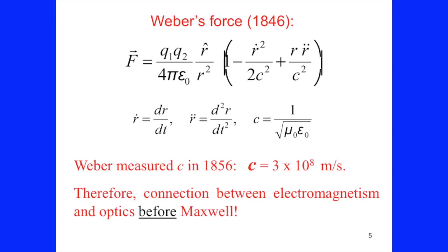The third component of Weber's law depends on acceleration in order to deduce Faraday's law of induction — that was the main idea. Here is the complete Weber electrodynamics in this single equation: a generalization of Coulomb's force with a component depending on relative velocity dr/dt and relative acceleration between the interacting charges. There is a constant C, which in the international system of units is 1 over the square root of 2·μ₀·ε₀. Weber introduced this constant into electromagnetism.